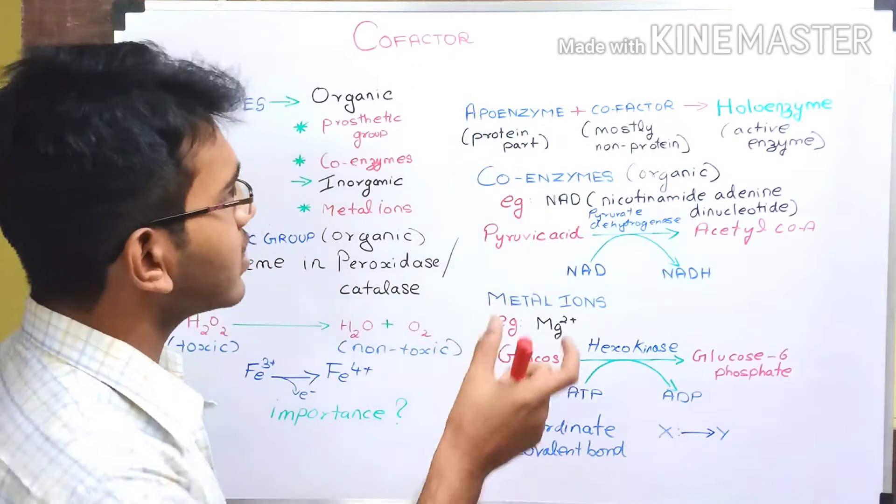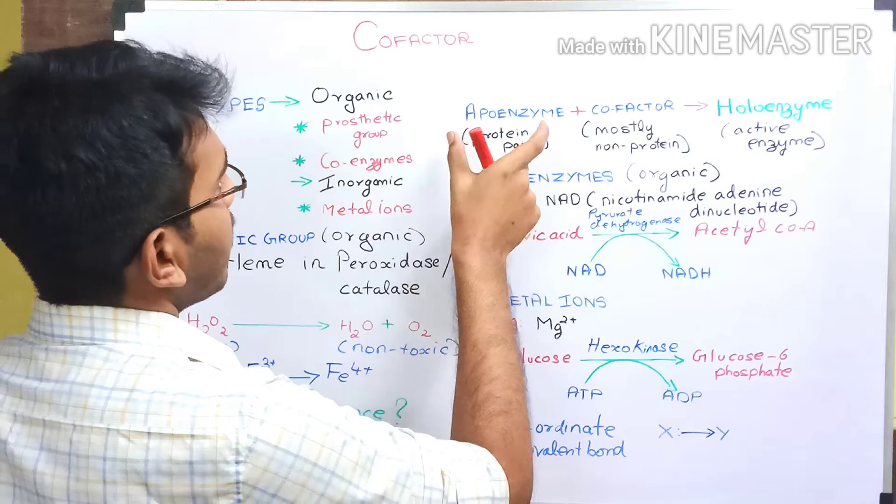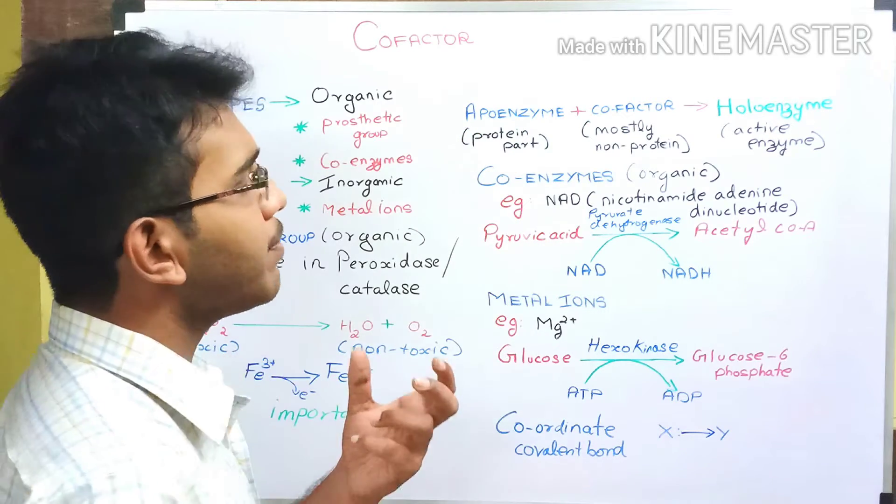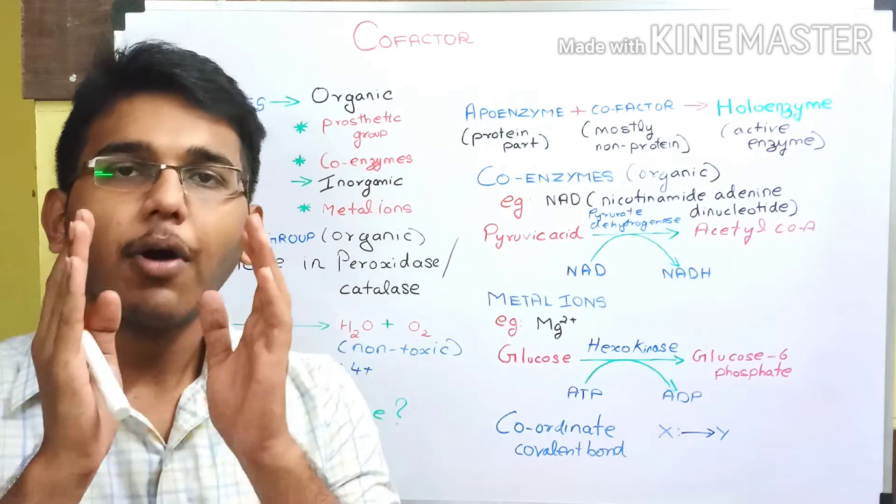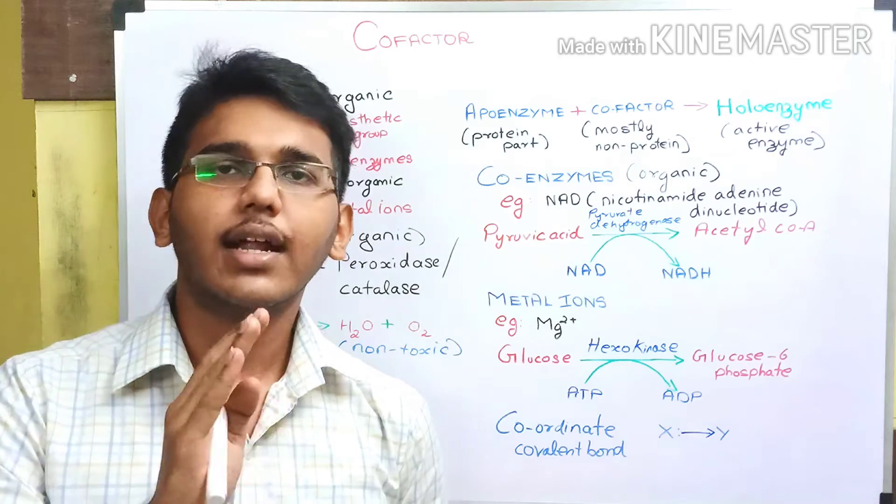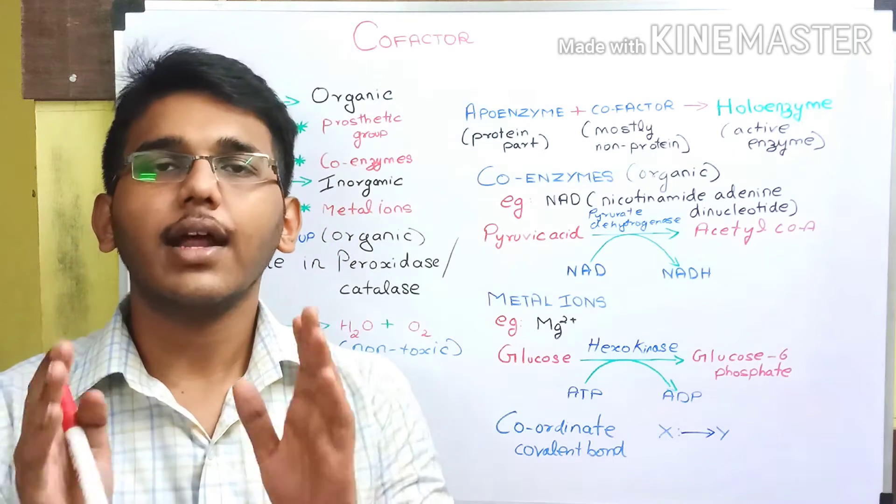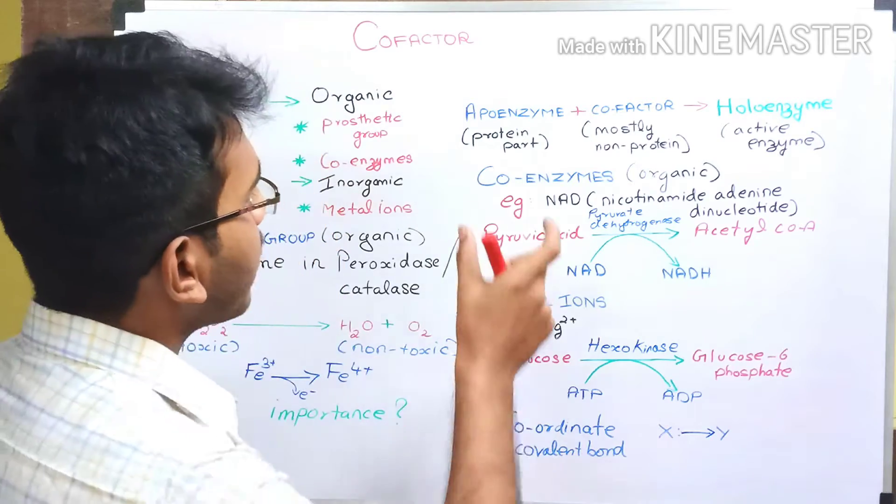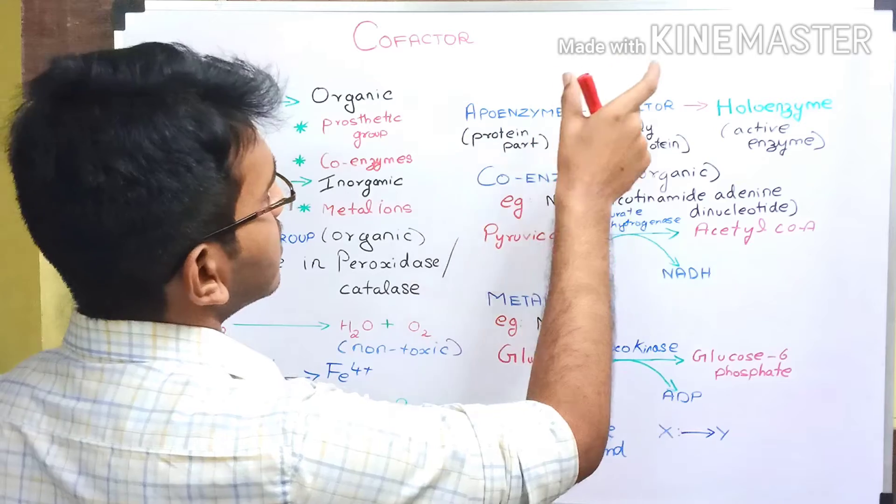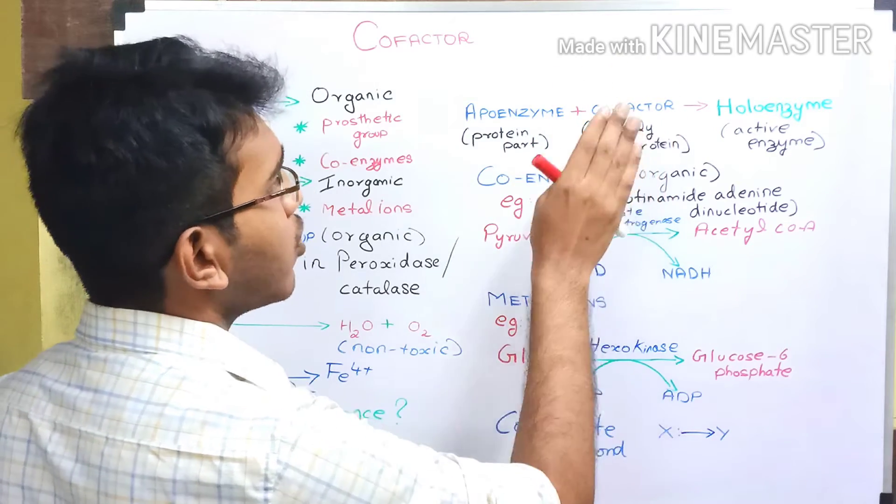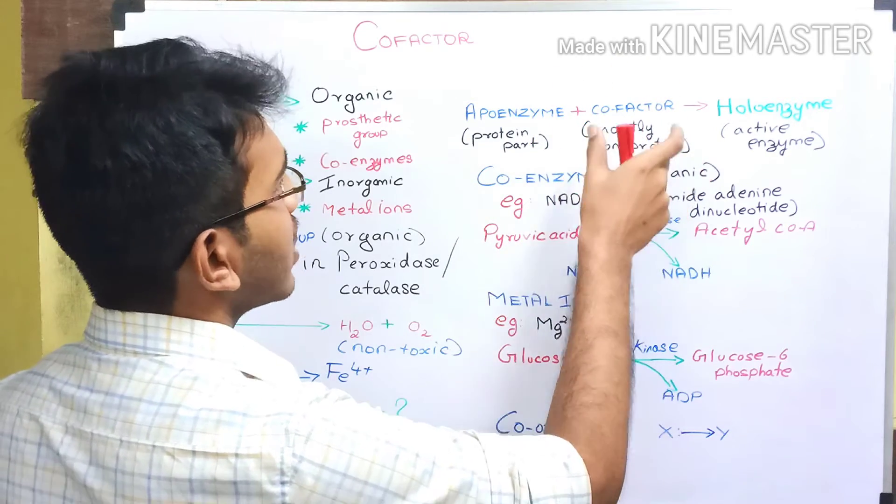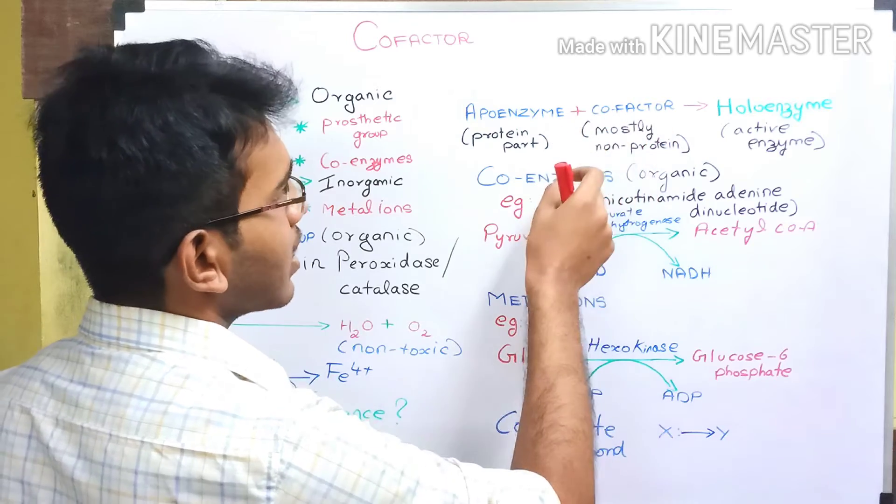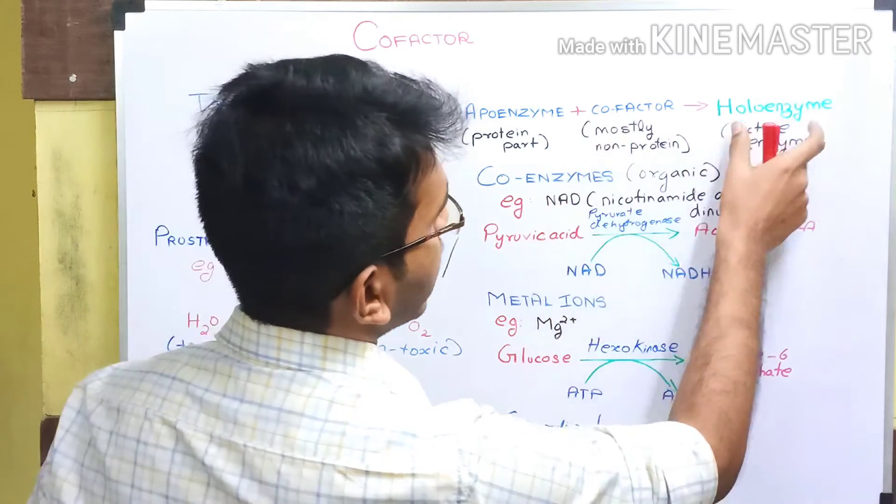If you see this combination here, the apoenzyme, that is the protein part of the enzyme that contains only proteins and is made up of polypeptide chains alone. When this apoenzyme combines with a cofactor, and cofactors are mostly non-protein compounds, this combination produces a holoenzyme.